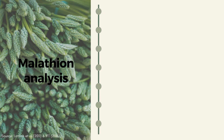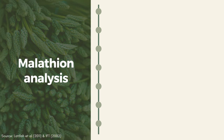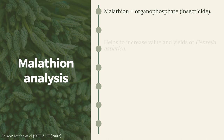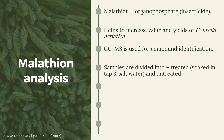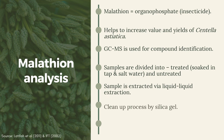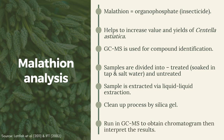There are various research works done in contaminant analysis. One example is malathion analysis studied by Latifa et al. in 2011. Malathion is a compound in insecticides from the organophosphate group, used to increase the value and yields of Centella asiatica, or in Malay, daun pegaga. In the GCMS system, it is determined using a mass spectrometer. Samples were divided into three groups: soaked with salt water, soaked with plain water, and untreated. The samples were extracted via liquid-liquid extraction, cleaned up by silica gel, and then run in the GCMS to obtain the chromatogram, and results were interpreted.